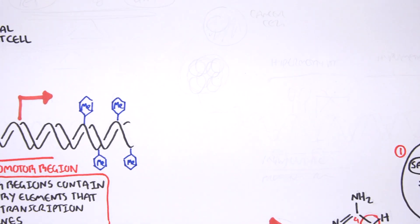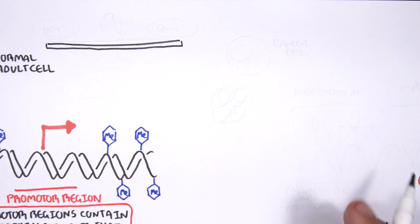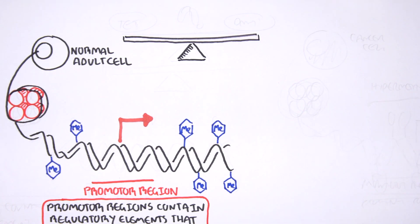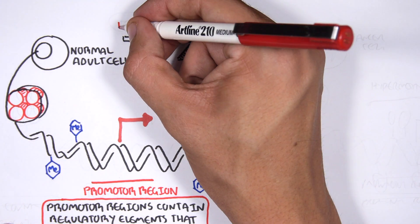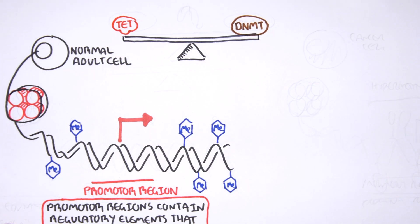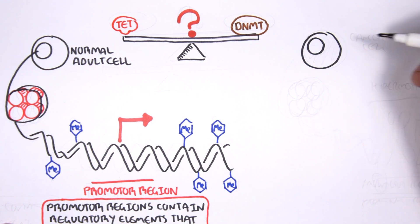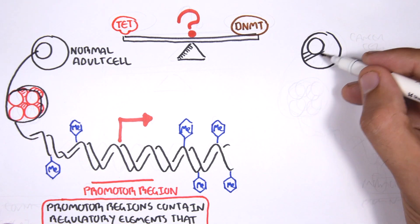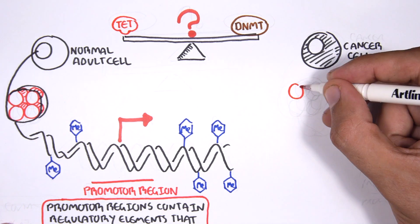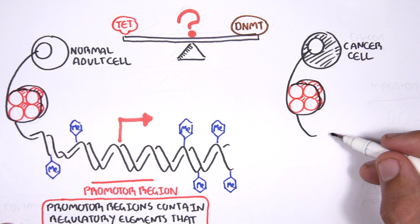In a normal cell, the two opposing processes of methylation and demethylation are tightly regulated in development. However, in cancer, this balance is potentially disrupted, and as a consequence, DNA methylation patterns change.